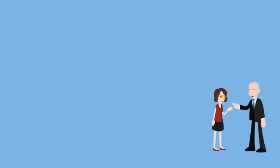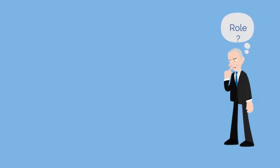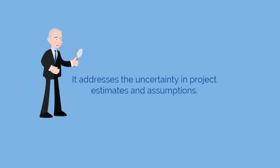Project management processes should include the possibility of project risks in the project plan. So what's the role of risk management? Let's list them one by one. Project risk management is essential for every project and each phase of the process group. It addresses the uncertainty in project estimates and assumptions.